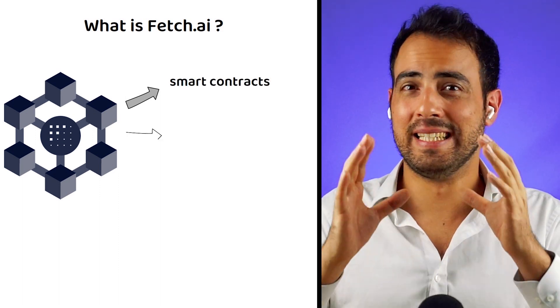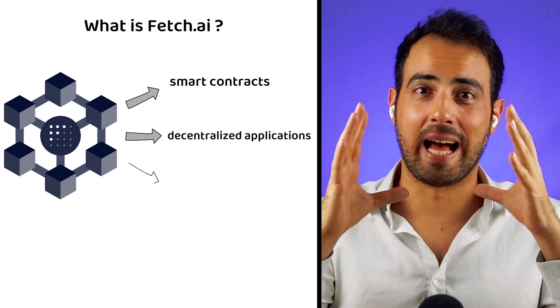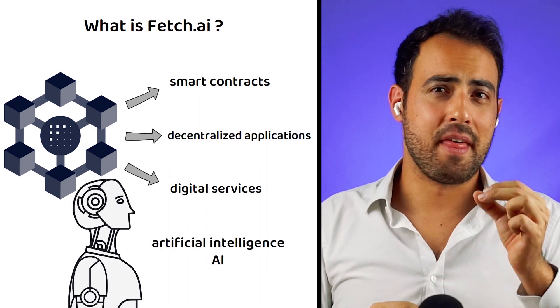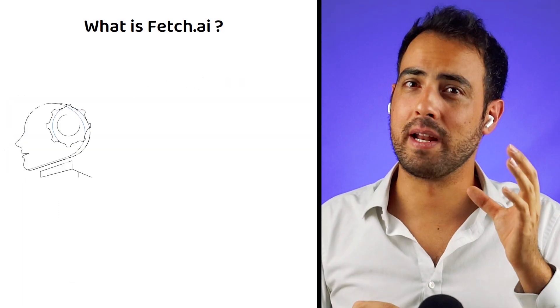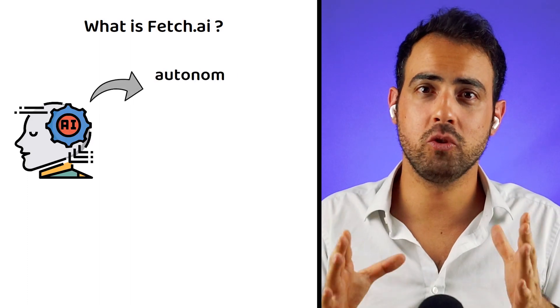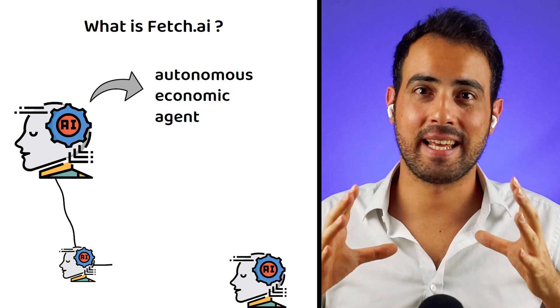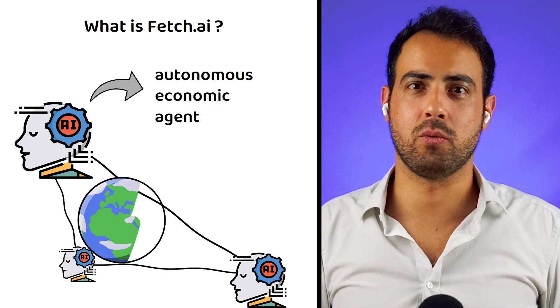Fetch.ai aims to enable the creation of smart contracts, decentralized applications, and other digital services through artificial intelligence. The purpose of Fetch.ai is to enable the creation of autonomous economic agents, which are digital entities that can interact with each other and the world in a decentralized way.